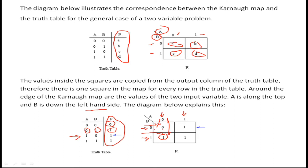In the third row, A=1 and B=0. When A is 1 and B is 0, the output is 1, so we write 1 in that cell. For the last row, A=1 and B=1, and the output is also 1 — so we write 1 there. This is how we construct a K-map from the truth table values, and then we will see how to simplify the expression.